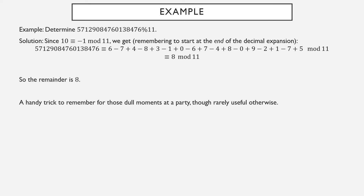If you happen to find yourself at a cocktail party and the conversation lulls, you can helpfully pipe up: 'Hey, does anyone want to know the remainder of a very large number when divided by 11?' — and then everyone else will have something new to talk about, namely how you're now very unpopular.